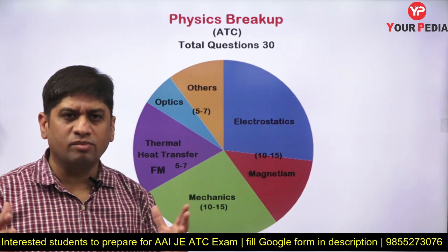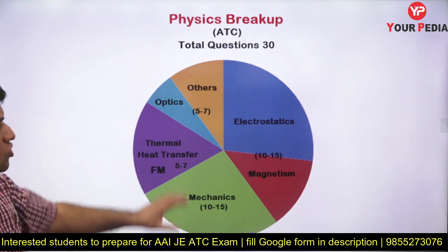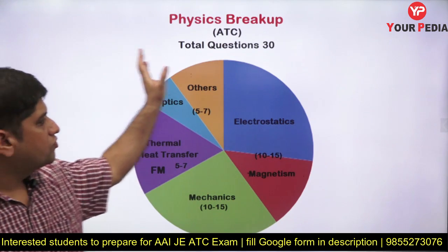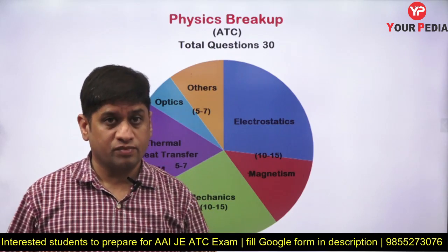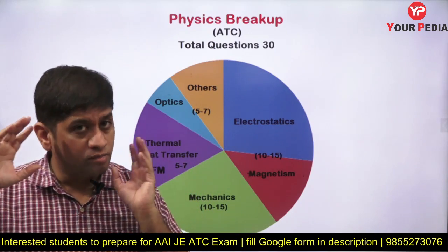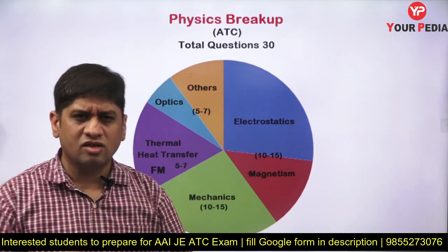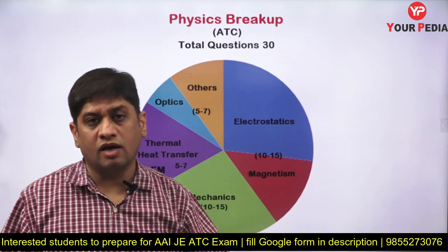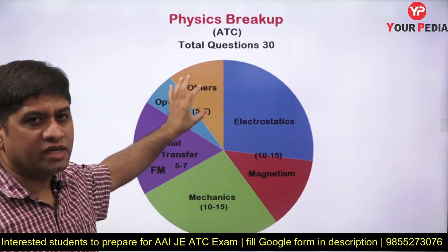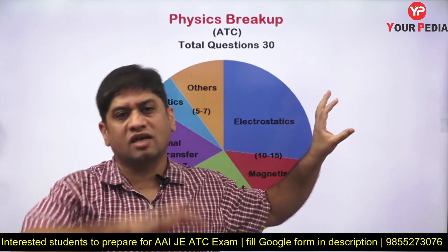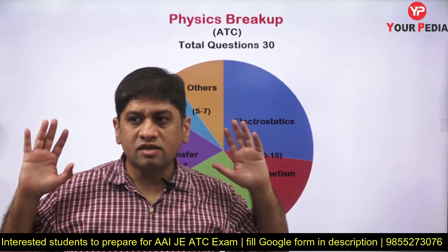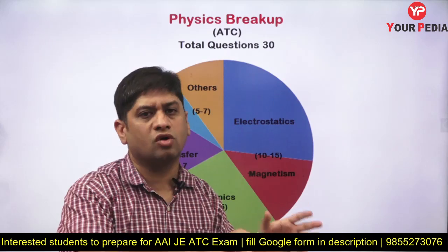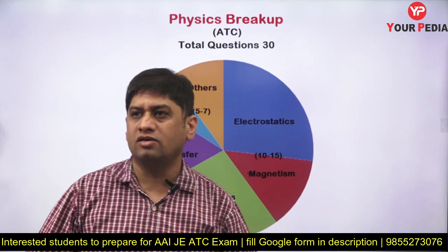Optics gives 3 to 4 questions, and miscellaneous topics together give around 5 to 7 questions. So if I divide the entire physics into categories: electrostatics and magnetism is the biggest portion, mechanics is almost the same, then comes the thermal, fluid, and heat transfer part third, and then optics and other topics. This is how I can broadly divide physics, and as an engineer from a particular branch, you should know where you are strong and what you should start with.